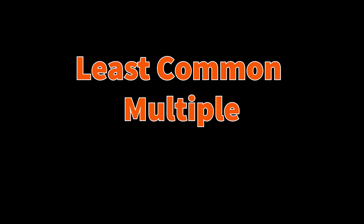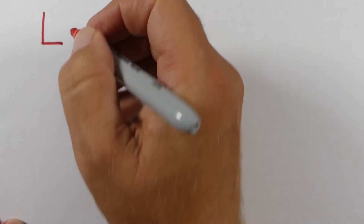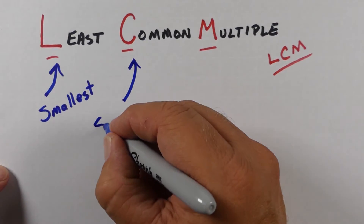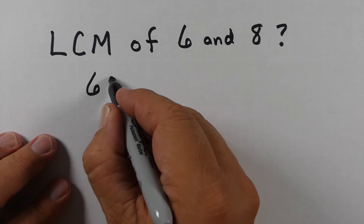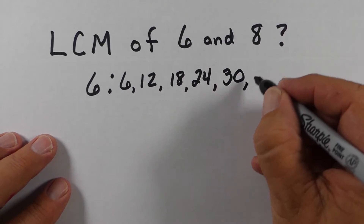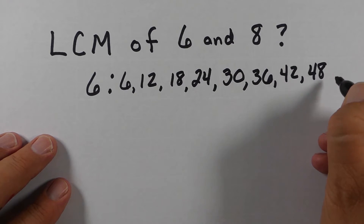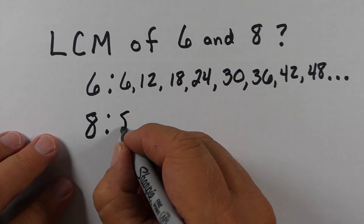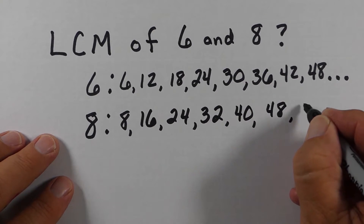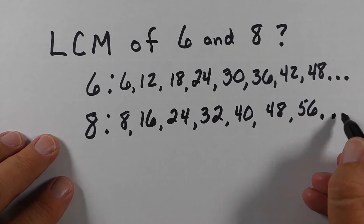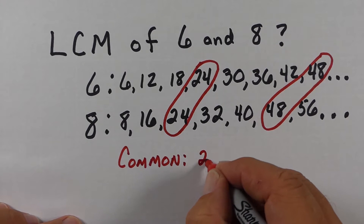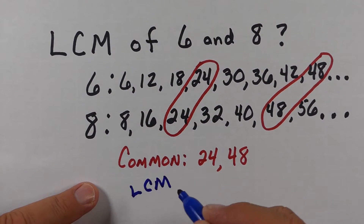Let's look at least common multiples. Least means the smallest, common is something we share, and multiple means we take a number and multiply it by one, two, three, four, and so on. When we look at six and eight, we list the multiples of six — multiplying by one, by two, by three, and so on — and do the same for eight: eight times one is eight, eight times two is sixteen, eight times three is twenty-four, and so on. They both share twenty-four and forty-eight in common, but the least common multiple is twenty-four.